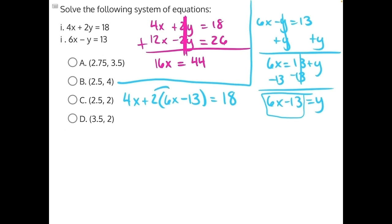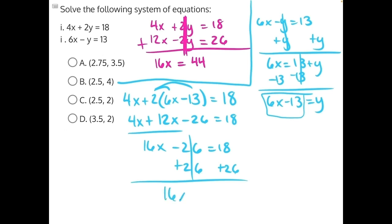Now we distribute. 2 times 6x is 12x. 2 times negative 13 is negative 26 equals 18. Bring down this 4x. Now we combine like terms. 4x plus 12x is 16x minus 26 equals 18. Then you would do opposite operations to add to both sides. These cancel, giving us 16x is equal to 44.